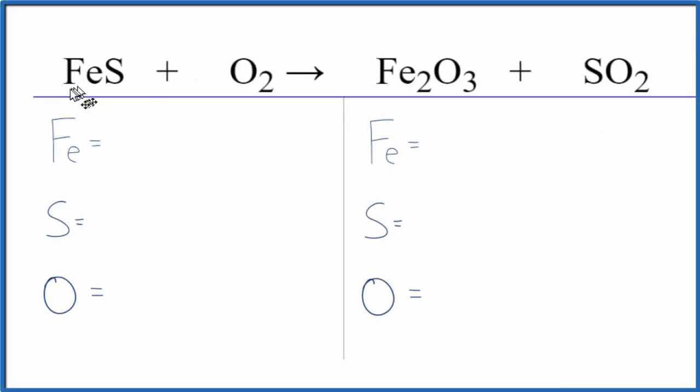In this video we'll balance the equation for FeS plus O2. This is iron 2 sulfide plus oxygen gas. We get iron 3 oxide and sulfur dioxide here.